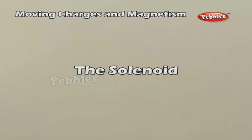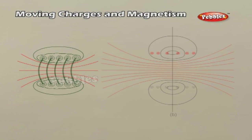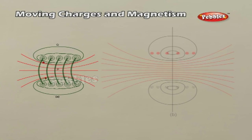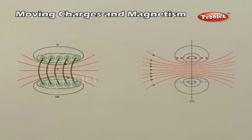The solenoid consists of a long wire wound in the form of a helix where the neighbouring turns are closely spaced. The figure displays the magnetic field lines for a finite solenoid. Figure A shows a section of the solenoid in an enlarged manner, and figure B shows the entire finite solenoid with its magnetic field. In figure A, it is clear from the circular loops that the field between two neighbouring turns vanishes. In figure B, the field at the interior midpoint P is uniform, strong, and along the axis of the solenoid.